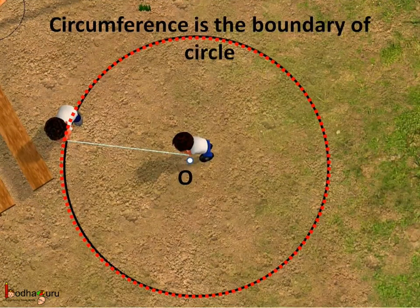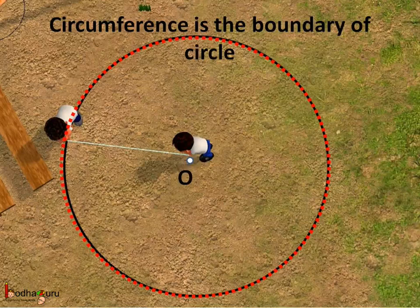The boundary or the edge of the circle is called its circumference. If you walk around a circle, like a circular path, you cover a distance equal to the length of the boundary of the circle — its circumference. In the picture, the red dotted line shows the circumference of the circle.